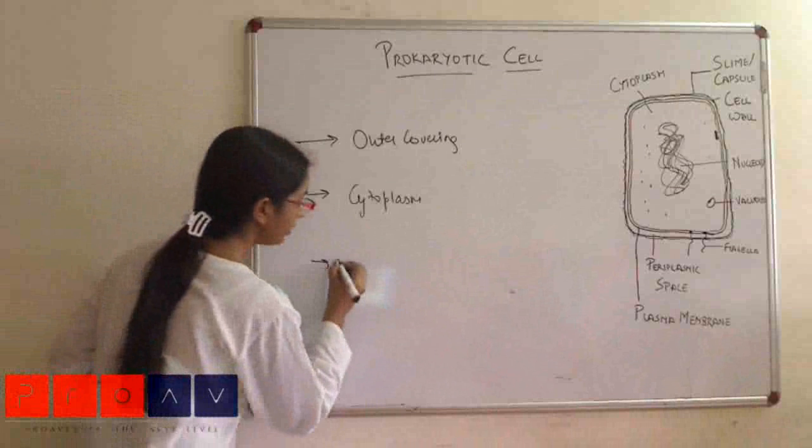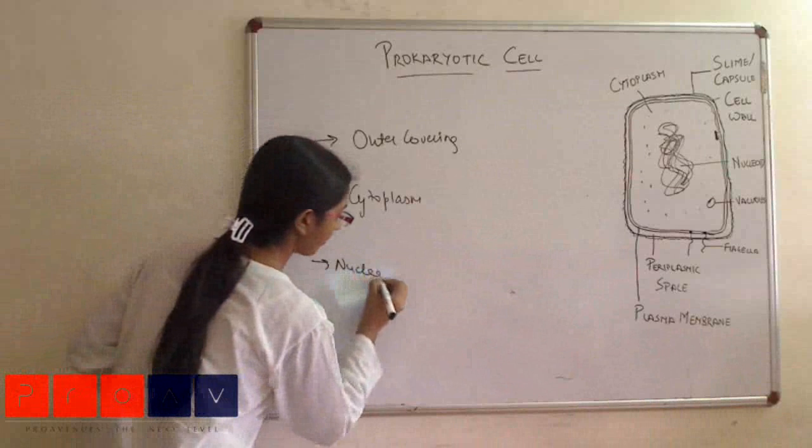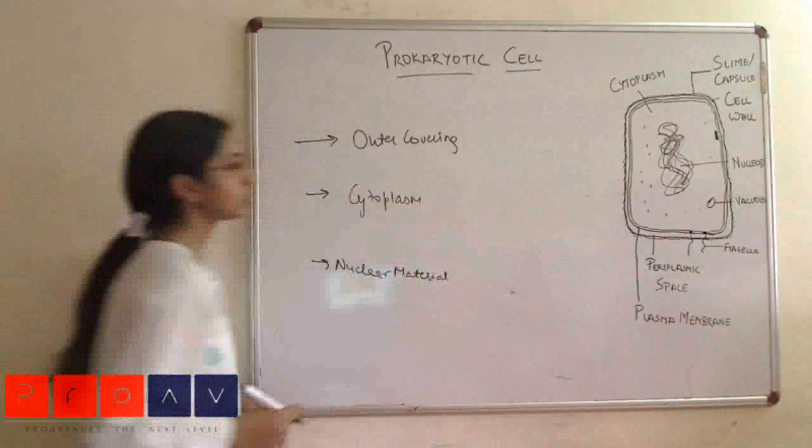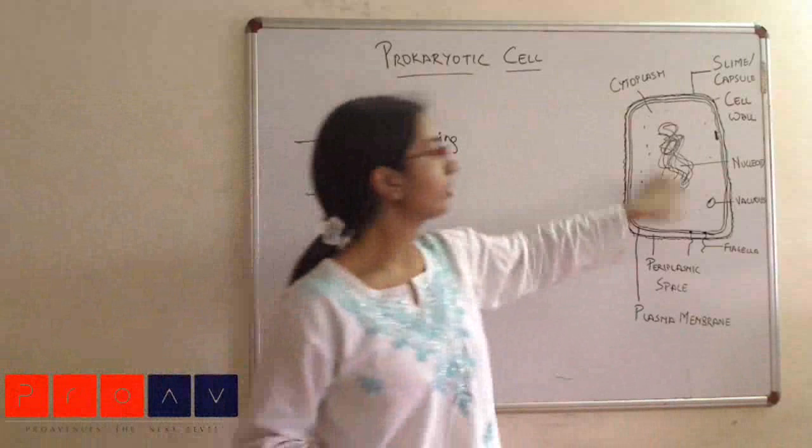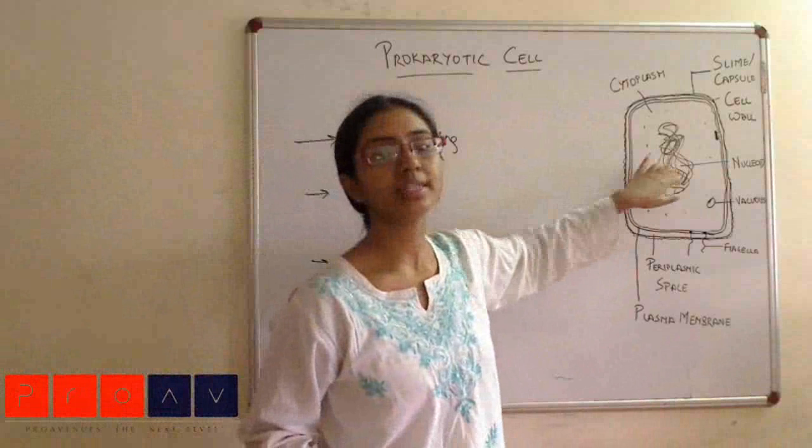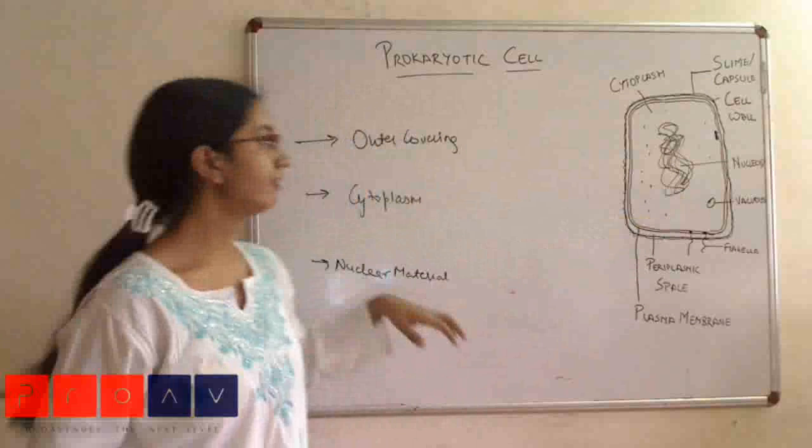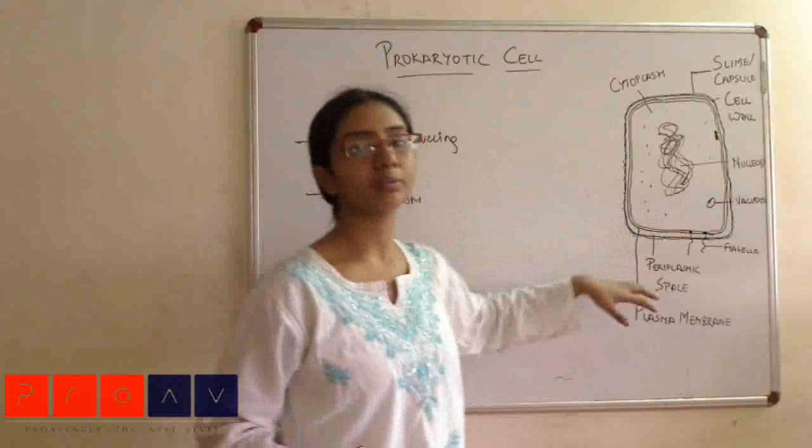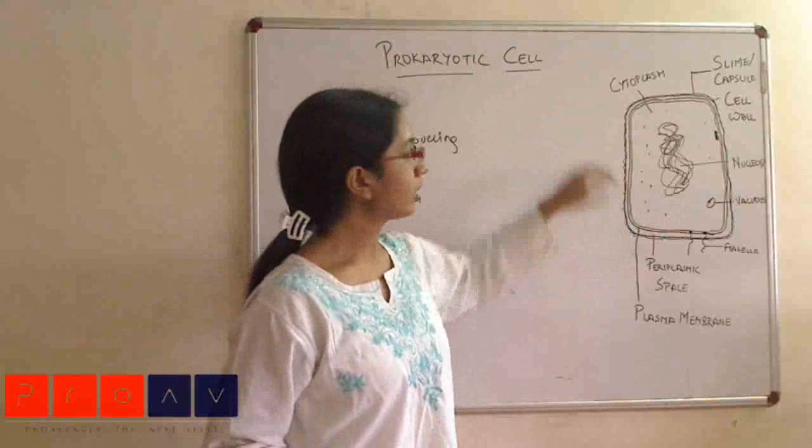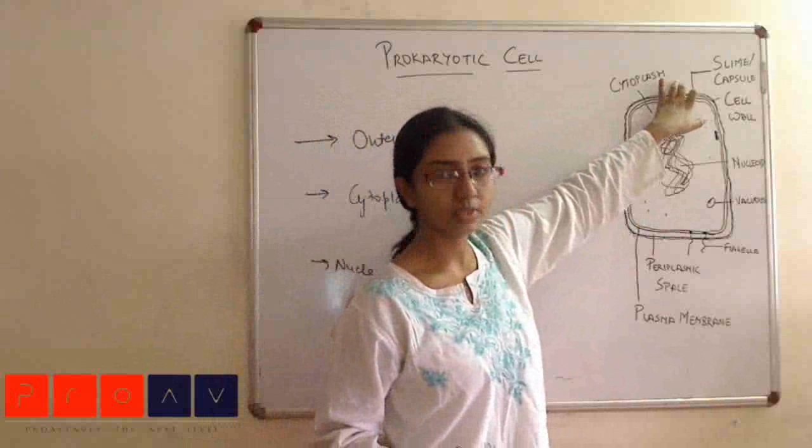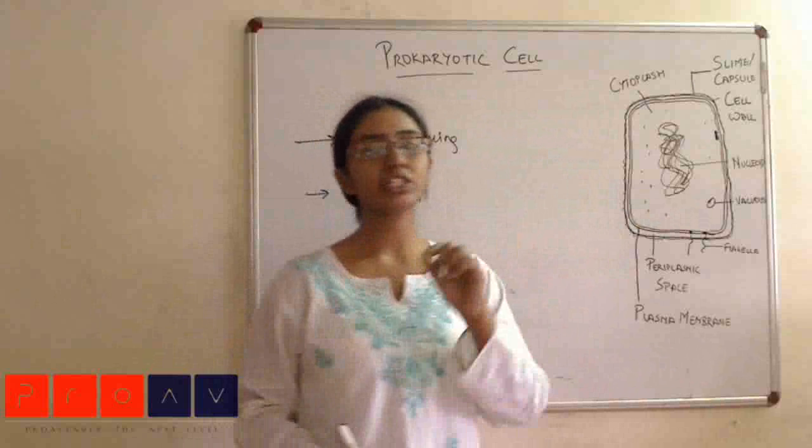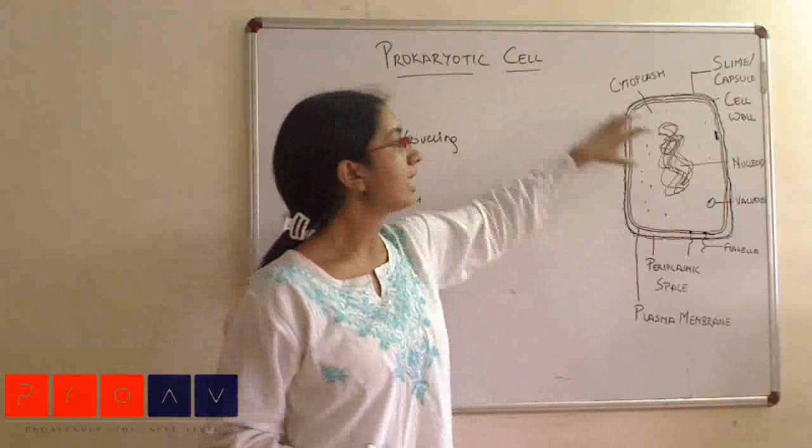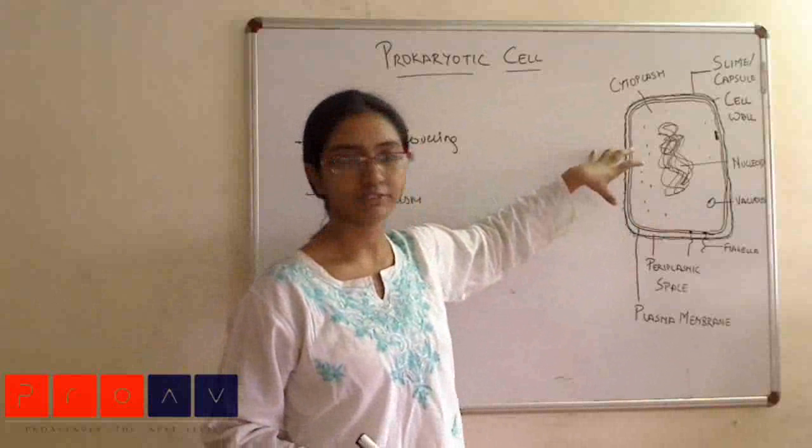The third one would be the nuclear material. In this case of the prokaryotic cell, this nucleoid is the nuclear material that we have. I will name the basic parts. We have a capsule at the outermost surface, which is basically a jelly-like material that helps in attachment to surfaces.